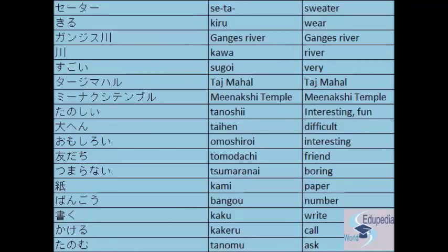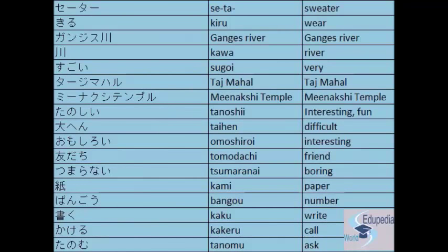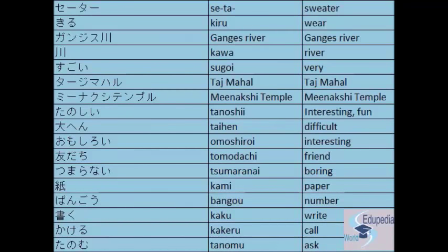'Taj Mahal' — one of the popular monuments in India. The next one is 'Meenakshi Temple' — this is one of the popular Hindu temples in South India. The next word is 'tanoshii' — interesting, enjoyable, or fun.